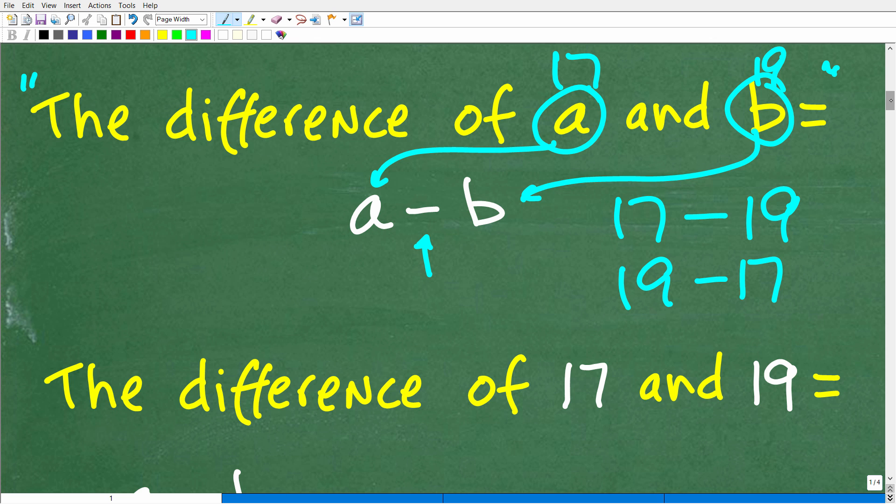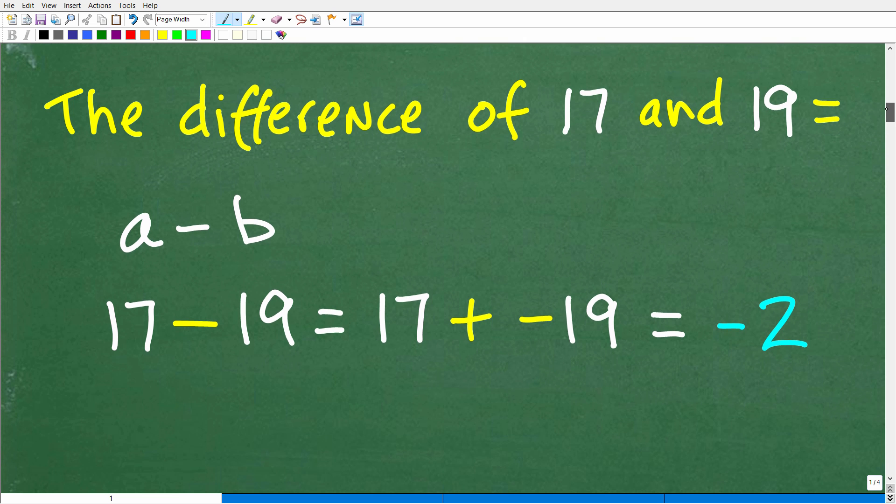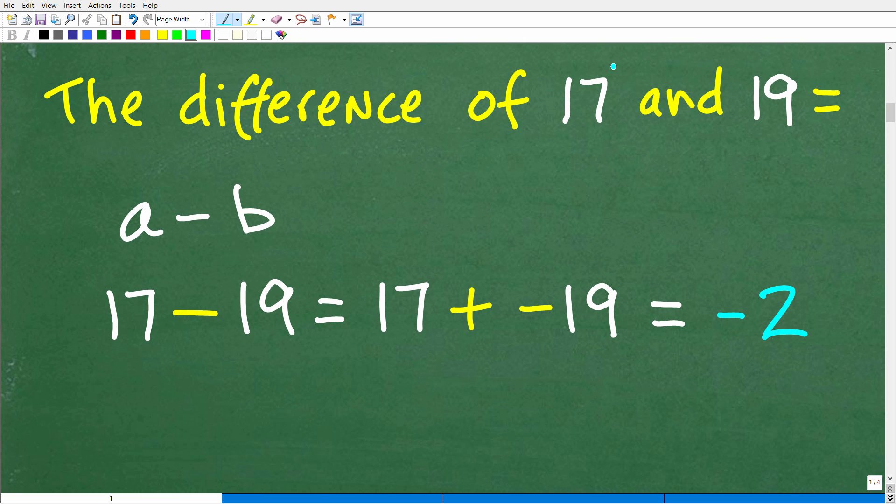Alright, so let's go ahead and see this in action. So the difference of 17 and 19, remember the first number is our A, the second number is our B. So the difference of two numbers is A minus B. So A is 17, and B is 19. So the question here really is 17 minus 19 is equal to what?